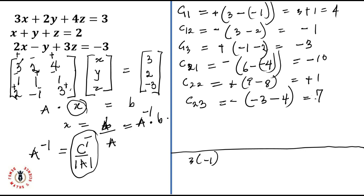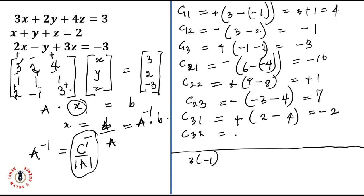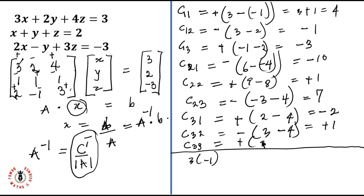For C31, it's positive: two times one is two, minus four, giving minus two. For C32, that's the third row and second column — picking one times three is three, minus four, giving plus one. For C33, it's positive: three times one is three, minus two, which equals positive one.